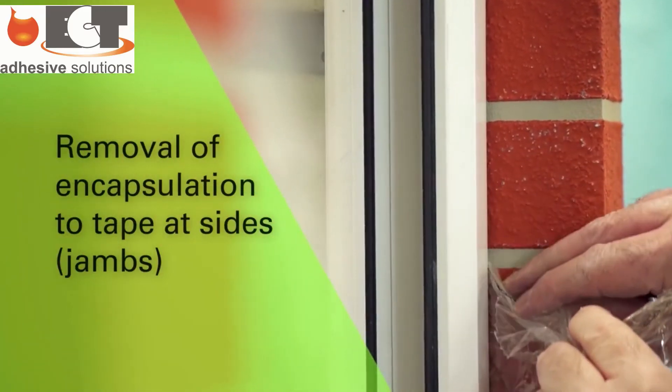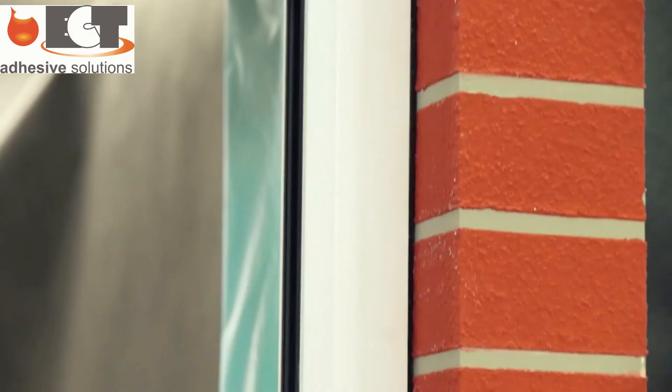With all four sides of the window now sealed, the encapsulating sleeve is removed from the TP601 and the tape will now expand to fully seal against the brickwork at the jams.